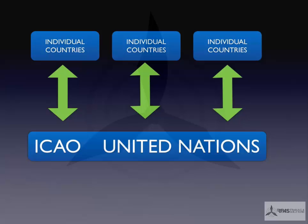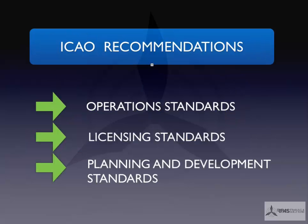ICAO is a part of the United Nations that deals with individual countries. Those individual countries, once they sign up as signatories to ICAO, they adopt a certain standard or code of practice that ICAO have issued as guidelines and general rules, and each country takes those rules on board. Once they become signatories to ICAO, the rest of the world know that they are on the same sort of page with regards to things like operation standards, licensing standards, and planning and development standards.